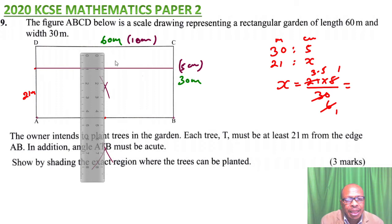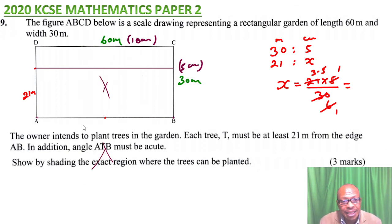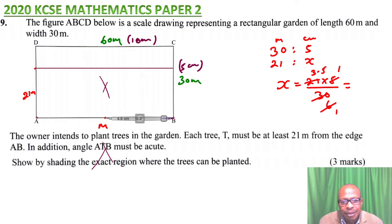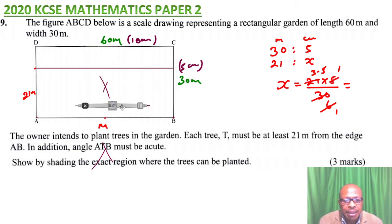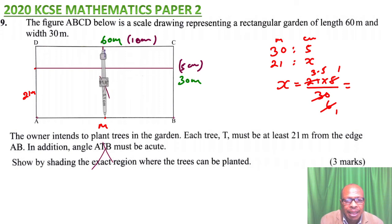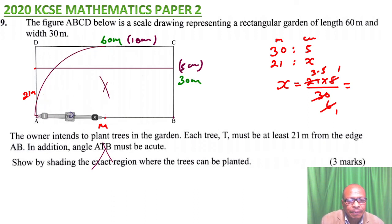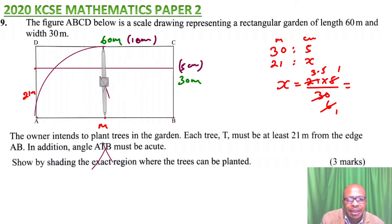Once you get that midpoint, use it as the center and the half-length of AB as the radius to draw a semicircle. Set your compass to that radius — from the midpoint to A — and draw the semicircle. My drawing may not be perfectly exact here, but that's how you do it.